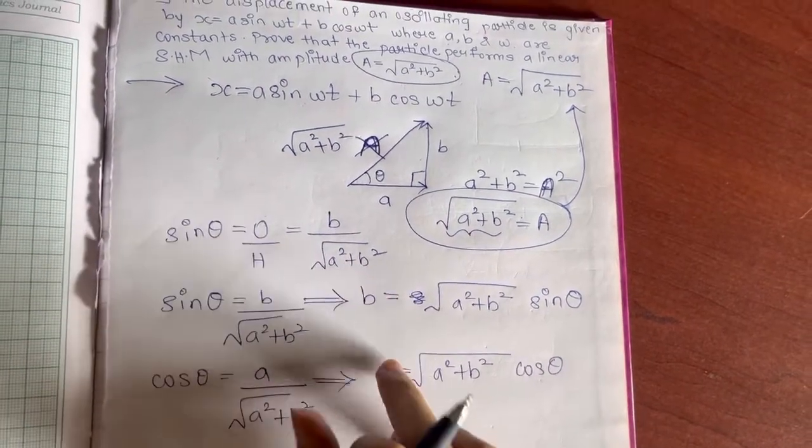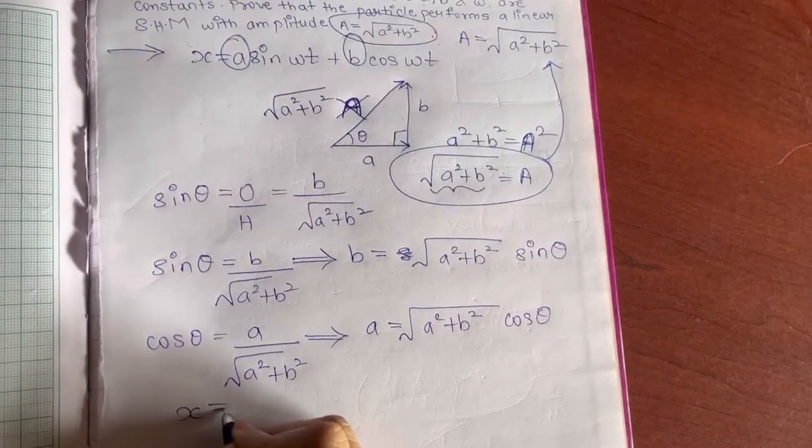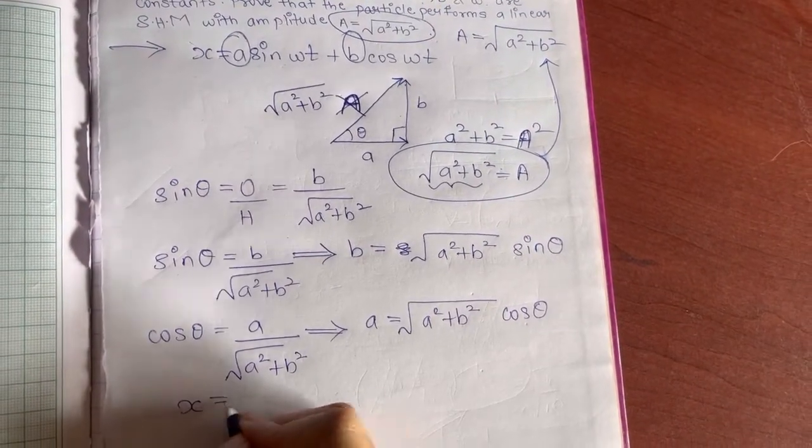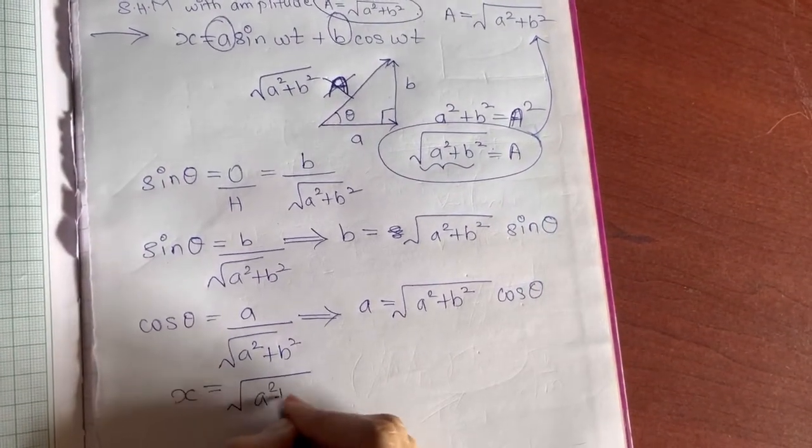Now, why are we finding the value of a and b? Because here you have a and b. You will substitute these two values. That is x equals the value of a is this, √(a² + b²) cos θ.